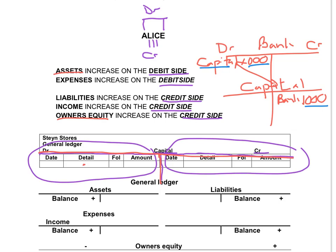If we look at this general ledger, you see that you have to record the date on which the transaction occurred. Then the details will be the name of your double entry account. Folio we will use when we start doing the subsidiary journal, so you don't use it at this stage. And the amount is, in this case, the one thousand rand for bank.